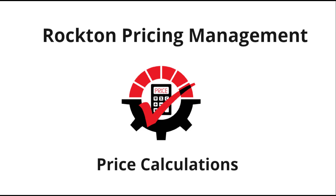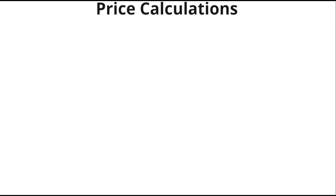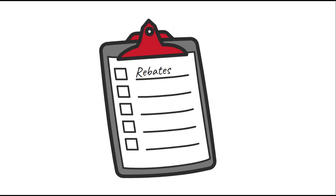Rockton Pricing Management, or RPM, uses price calculations to track adjustments to pricing in your ERP, such as rebates, royalties, commissions, fees, discounts — really any type of adjustment you need. You can add multiple calculations to one transaction line, so each line could even have different calculations.